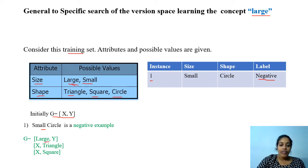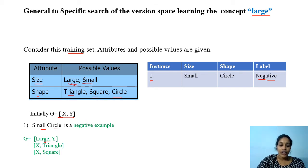Now, y is getting matched with 'circle.' The specializations y can take are triangle, square, and circle. We don't give circle as its value, because if we give circle, this hypothesis accepts the negative instance. So we specialize y by giving triangle and square, resulting in hypotheses {x, triangle} and {x, square}. Thus we have made these specializations to G to reject the negative instance.